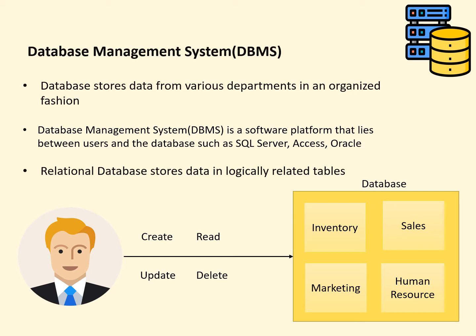A database stores data from various departments such as inventory, sales, marketing, and human resources in an organized fashion. A database management system, or DBMS, is a software platform that lies between users and the database — examples include SQL Server, Microsoft Access, and Oracle. It provides users with features to create, read, update, and delete data in a database. A relational database stores data in logically related tables, allowing users to manipulate data stored in those tables.